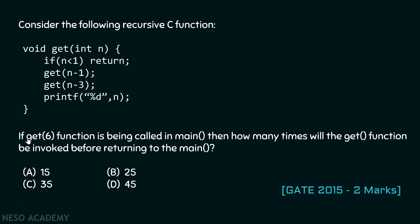The question says if get(6) is being called in main, then how many times will the get function be invoked before returning to main? There is no main function mentioned, therefore we assume there is one main function and inside that we are calling get(6) — meaning we are calling get and passing argument six to variable n. We need to answer how many times the get function is invoked before returning back to main.